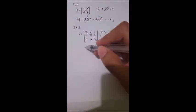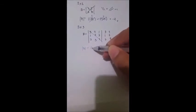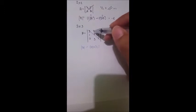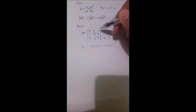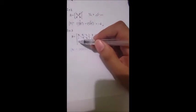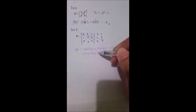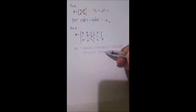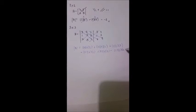The determinant will be 3 times 2 times 1, plus 2 times 3 times 2, plus 1 times 1 times 3. And the opposite, minus 2 times 2 times 1, minus 3 times 3 times 3, minus 1 times 1 times 2.